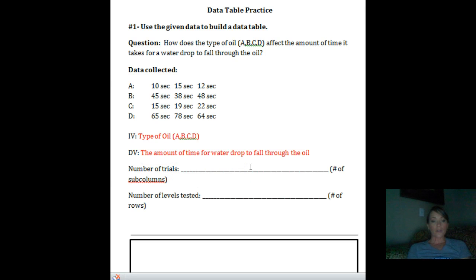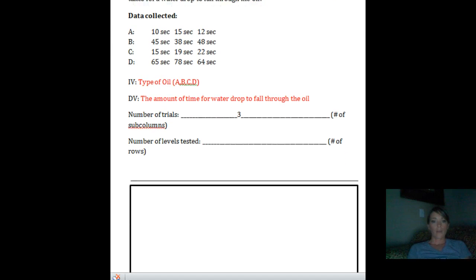The number of trials is going to be the number of sub columns. So when I fill out my data table down here, I need to know how many trials that they're doing. And I can see here that A, they let the water drop through one, two, three times. And they did that for all of the trials.